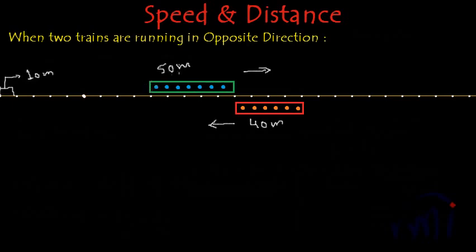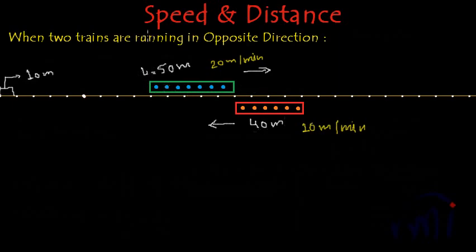Now let's assume the speed of the green train as 20 meters per minute. The speeds are in meters per minute because the length of the red train is 10 meters per minute. So our assumptions are: L1 equals 50 meters, L2 equals 40 meters, speed S1 equals 20 meters per minute, and speed S2 equals 10 meters per minute.